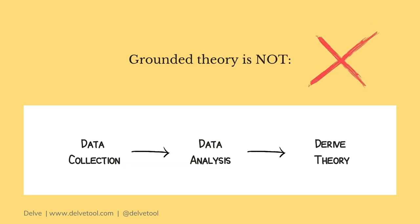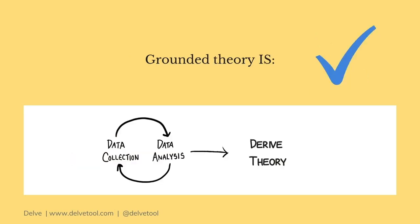Another thing that grounded theory is not is that it is not a process where you collect data, analyze data, and then derive your theory in distinct steps. Instead, it is a process where you collect data and analyze it in an iterative manner, and from that you derive your theory.